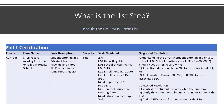We use the first two columns — the error number and the error name — to identify the information about the error we want. The third column from the left is the error description; it tells us the problem: student enrolled in a private school must have an associated special education record in the same LEA. That tells us the problem, but not why. We have to look at other documentation to find that out.